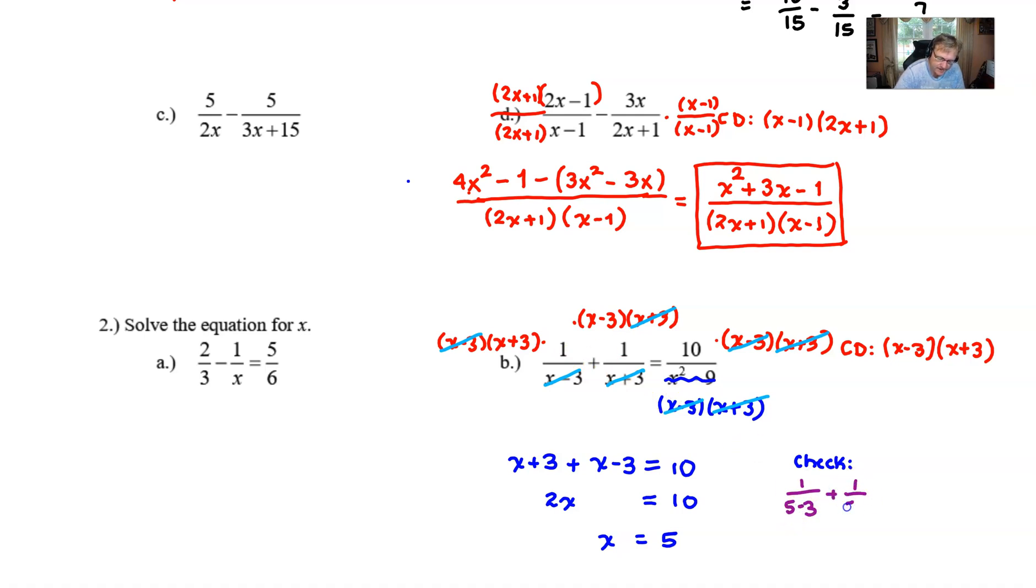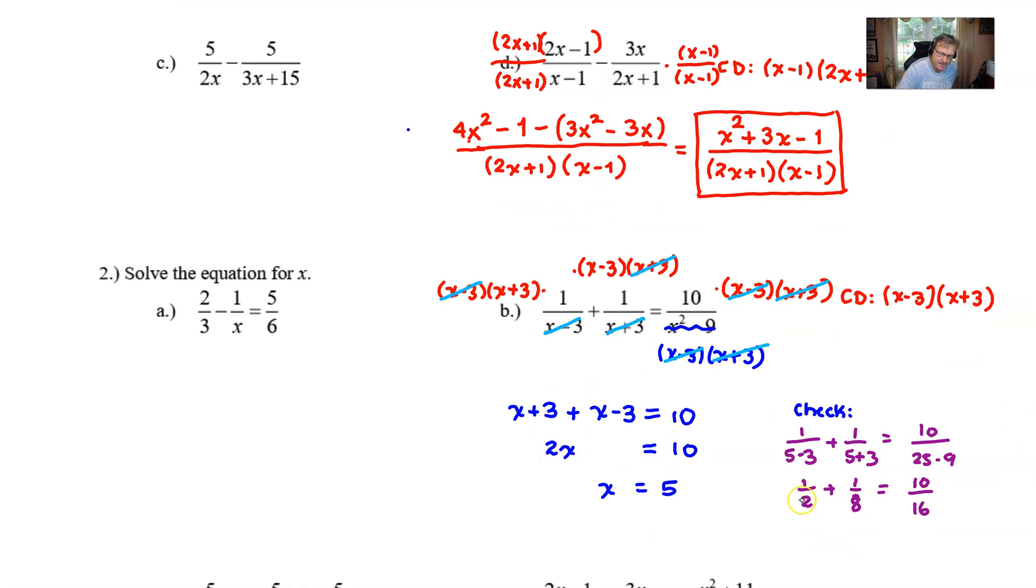So by checking this, we're just going to simply plug in 5 for our x and we get 1 over 5 minus 3, 1 over 5 plus 3, equals 10 over 5 squared, that's 25, minus 9. Let's simplify this. We have one half plus one half equal to 10 over 16. We can get a common denominator of 16, multiply this by 8 over 8, that would be 8, and multiply this by 2 over 2, that would be 2. I think it's pretty clear at this point that those are going to check. You get 10/16 on both sides. What that does is it means you have a license now to box in that answer because you know it's correct.